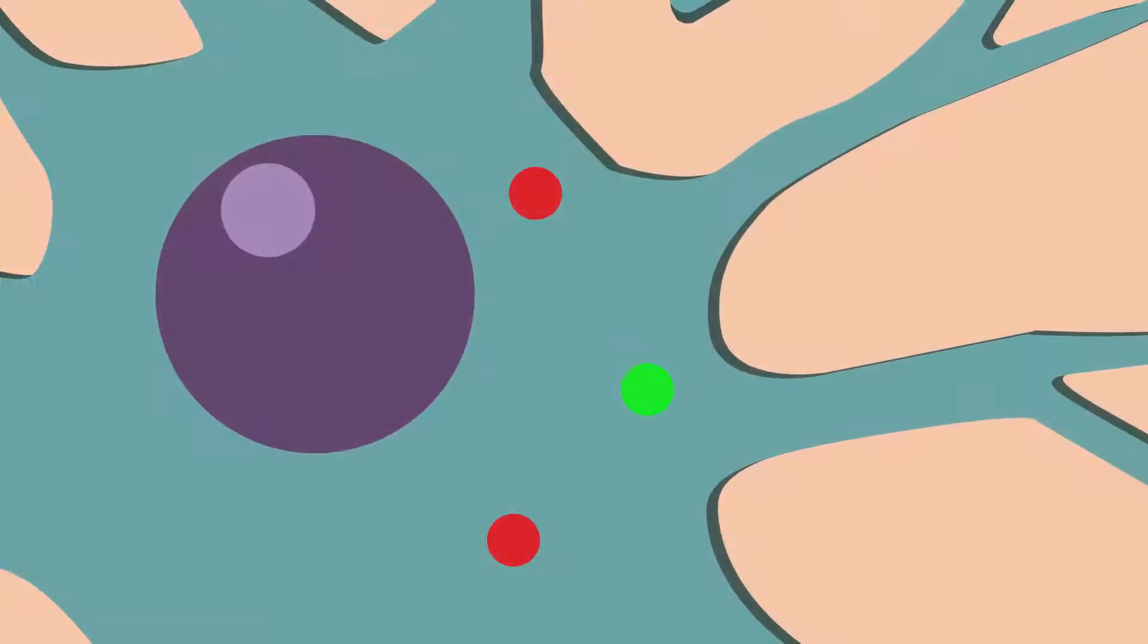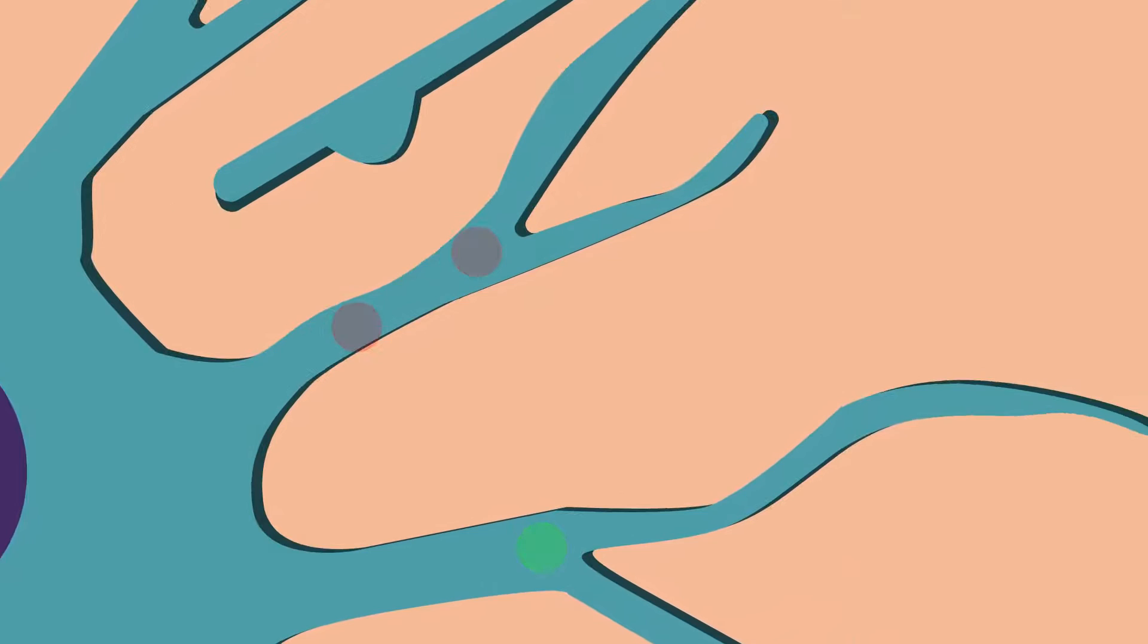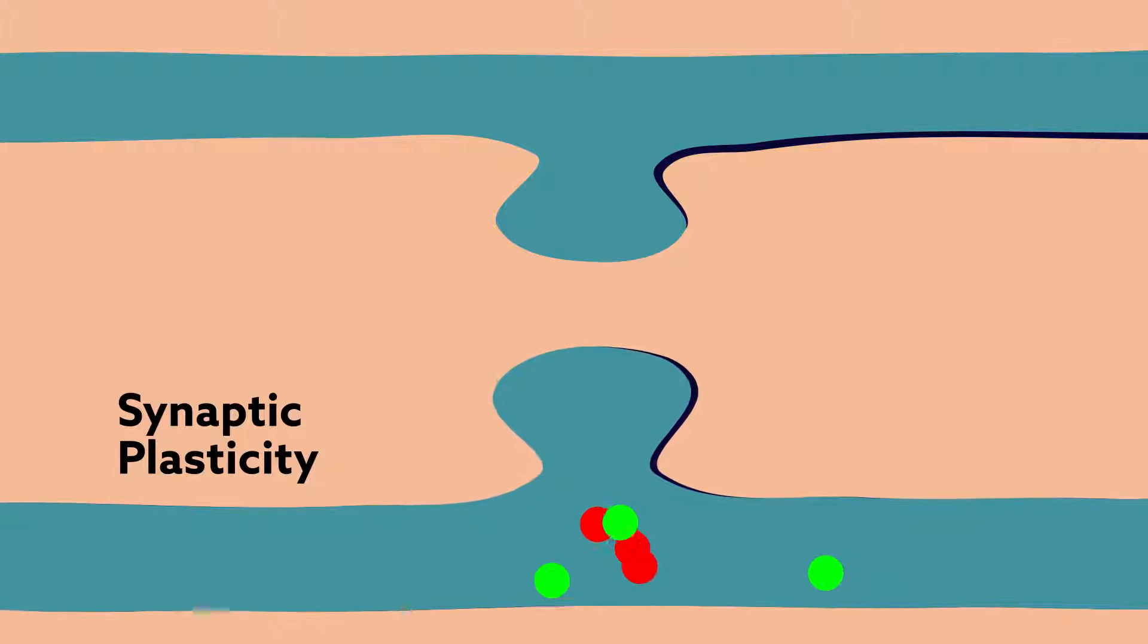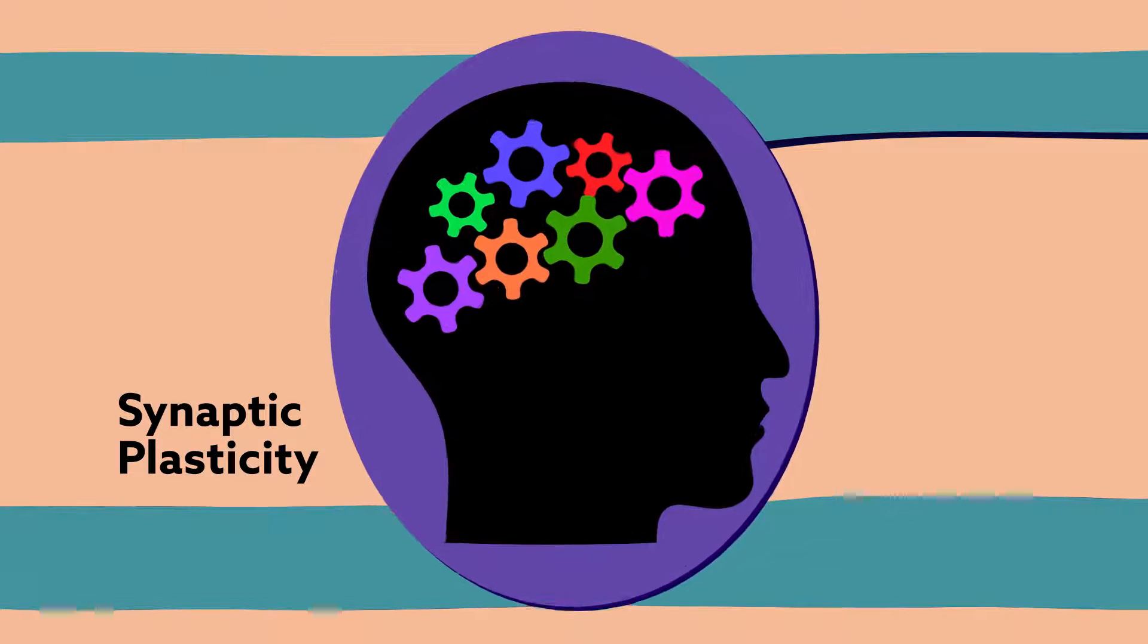New proteins would allow researchers to study more than one molecule at a time, and would also let them keep track of any physical changes to synapses. Structural changes are a key part of synaptic plasticity, or how synapses strengthen or weaken over time, and are thought to be the underpinnings of memory.